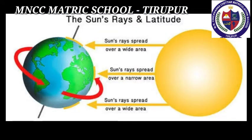The earth is spherical in shape, so the sun rays fall unevenly on the earth's surface. The polar regions receive slanting sun rays; hence there is little or no sunlight and there is extreme cold winter. Vertical sun rays fall directly on regions around the equator; hence the climate is very hot and almost no winters are there.